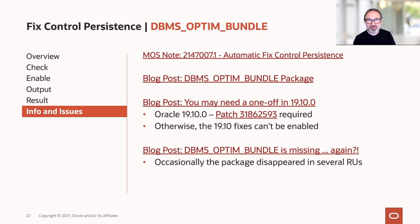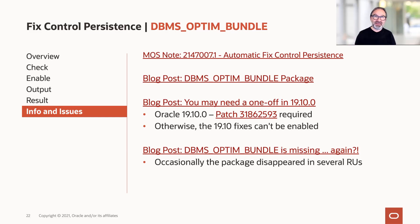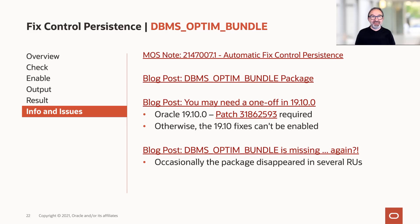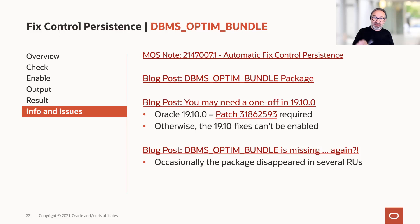It sounds good, it's helpful, it just has some tiny little flaws. As mentioned, in some cases it appeared and disappeared again in the next bundle or release. Especially for 19.10, you need something: unfortunately, when you want to use DBMS Optim Bundle with 19.10, you need patch 31862593. Because if you don't have that, DBMS Optim Bundle tells you only 99 fixes — it can't produce the full output for 19.10 because the XML information hasn't been loaded into the database, so you can't set the correct fixed control settings. Simple patch, doesn't require datapatch. Then you go with this one.